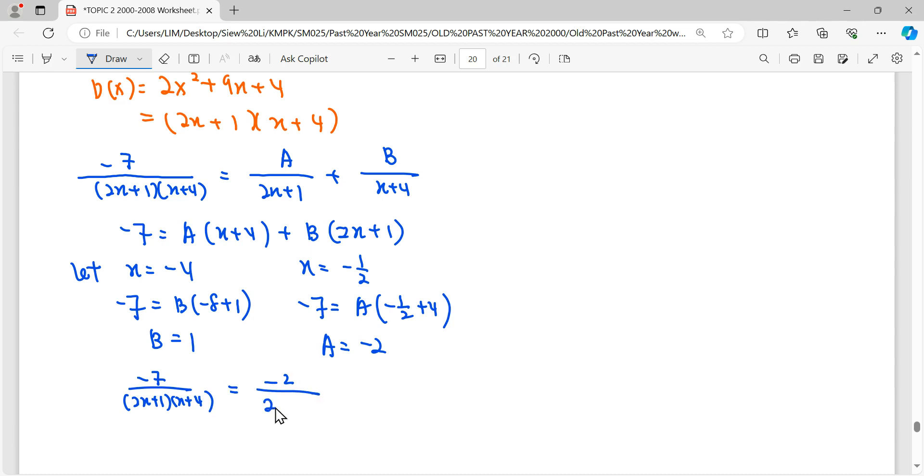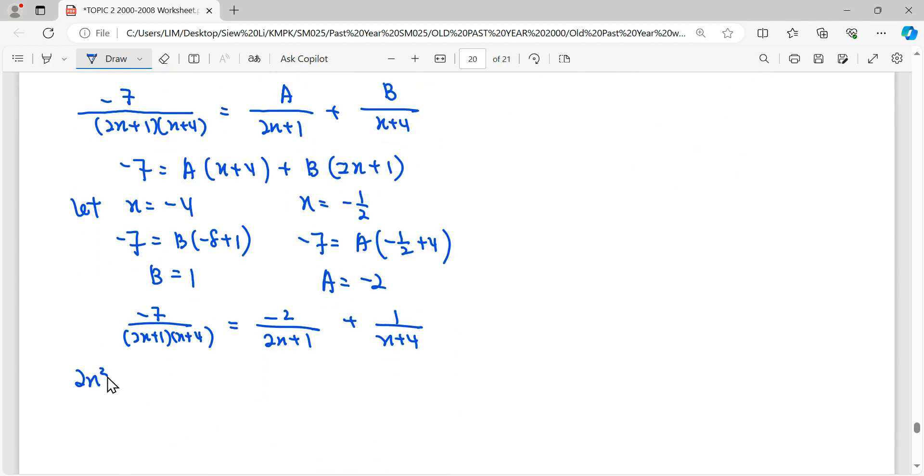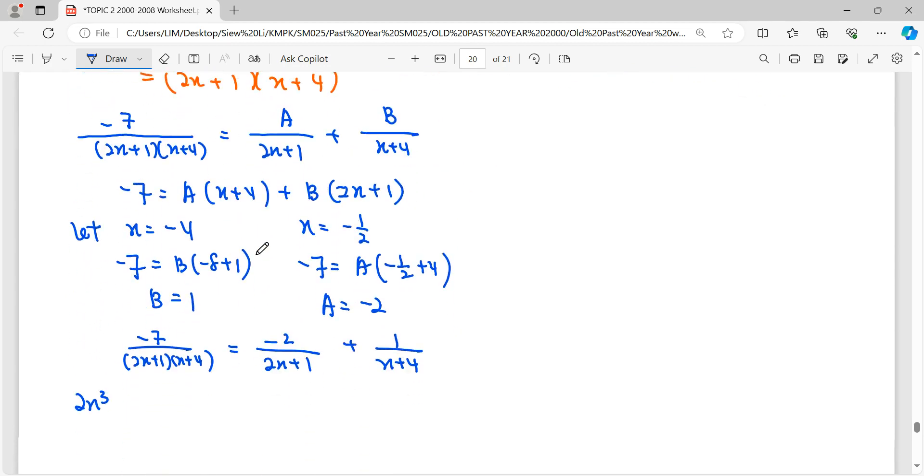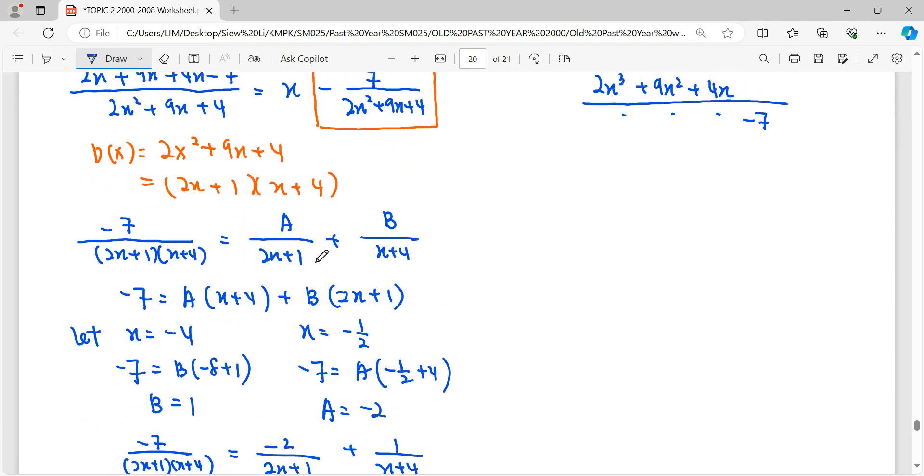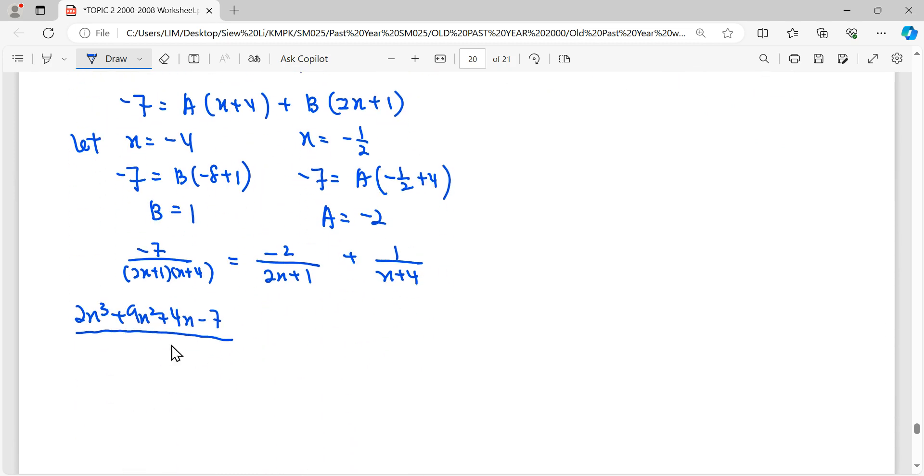So finally we rewrite it. The first partial fraction, negative 2 over 2x plus 1, B is 1 over x plus 4, and then completely substitute back to the fraction here.